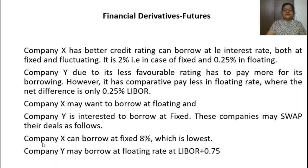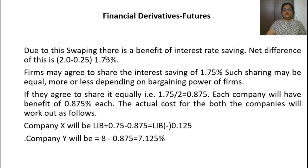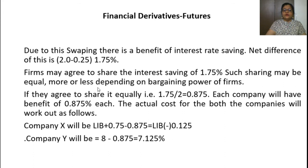Once the swap is done, Company X borrows at a fixed rate and Company Y borrows at a flotation rate — they have exchanged interest rates. Due to this swap, there is a benefit of interest rate saving. The net difference we saw in the table is 1.75%. Firms may agree to share this interest saving equally or in different proportions depending on the bargaining power of the firm.